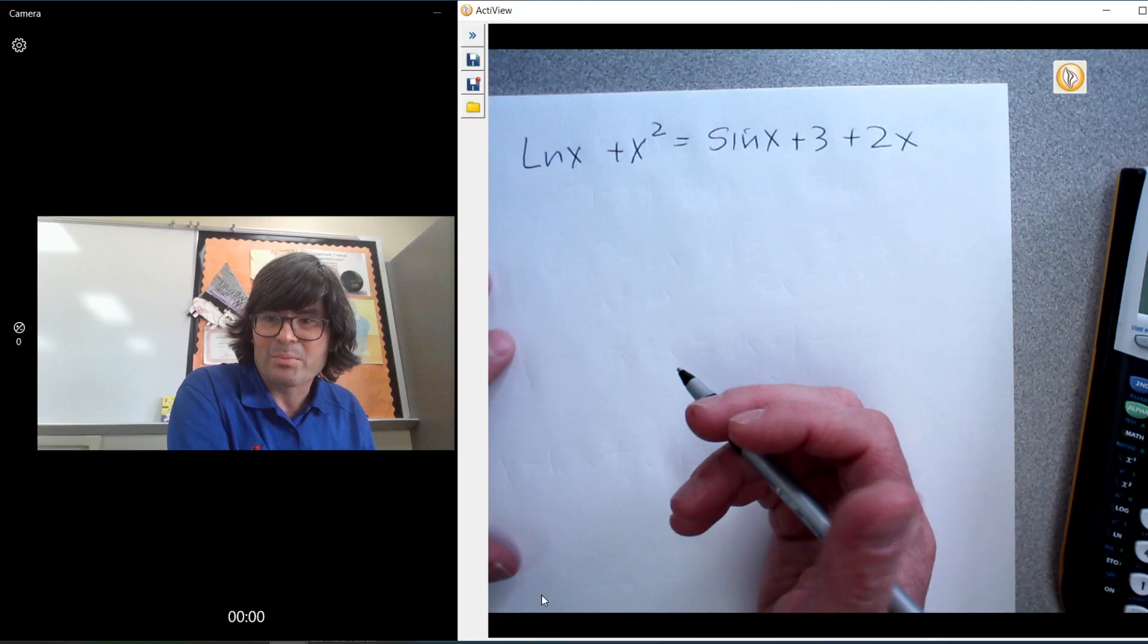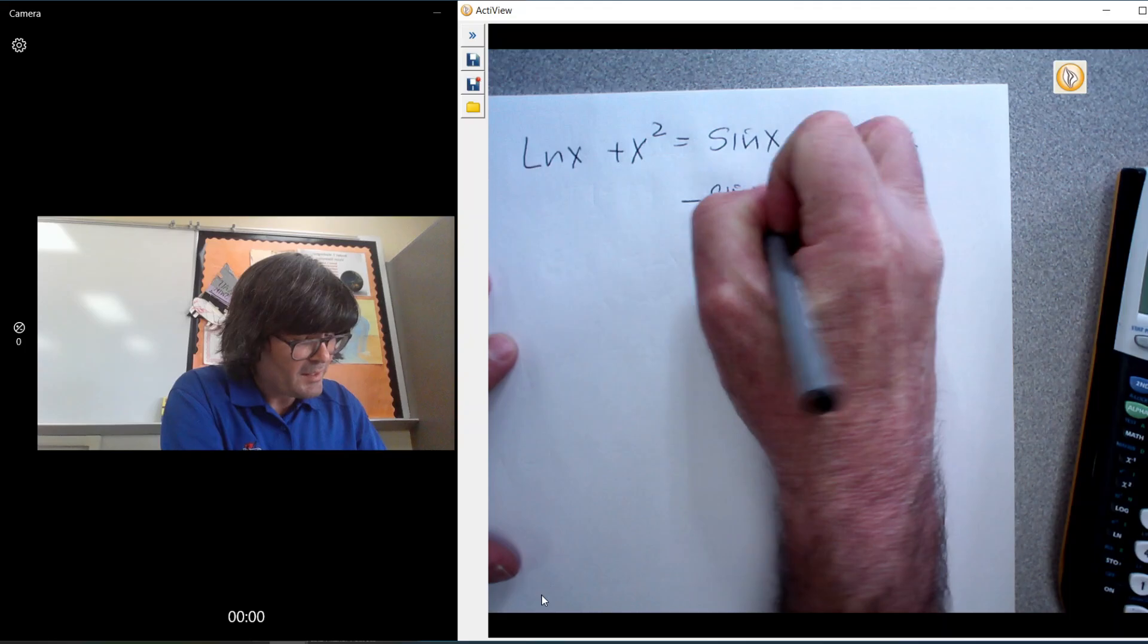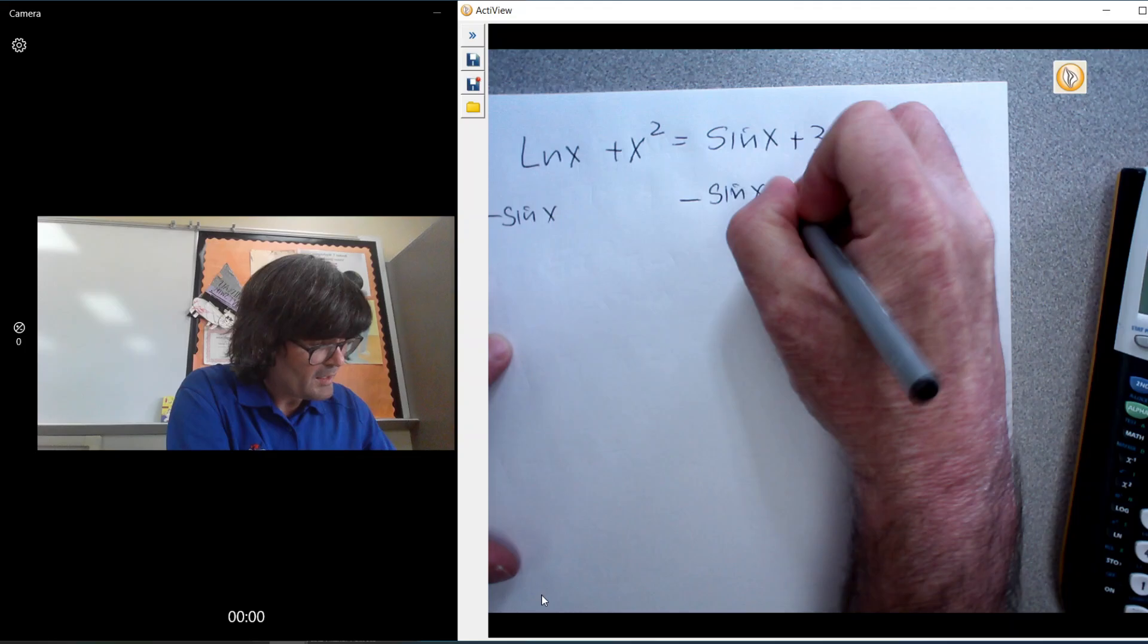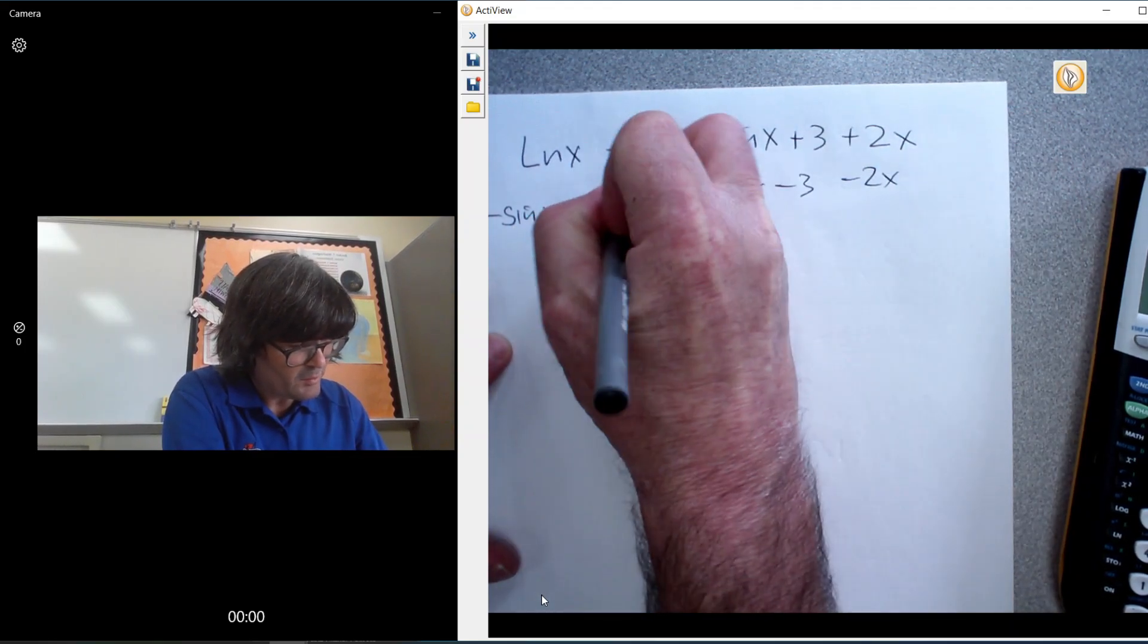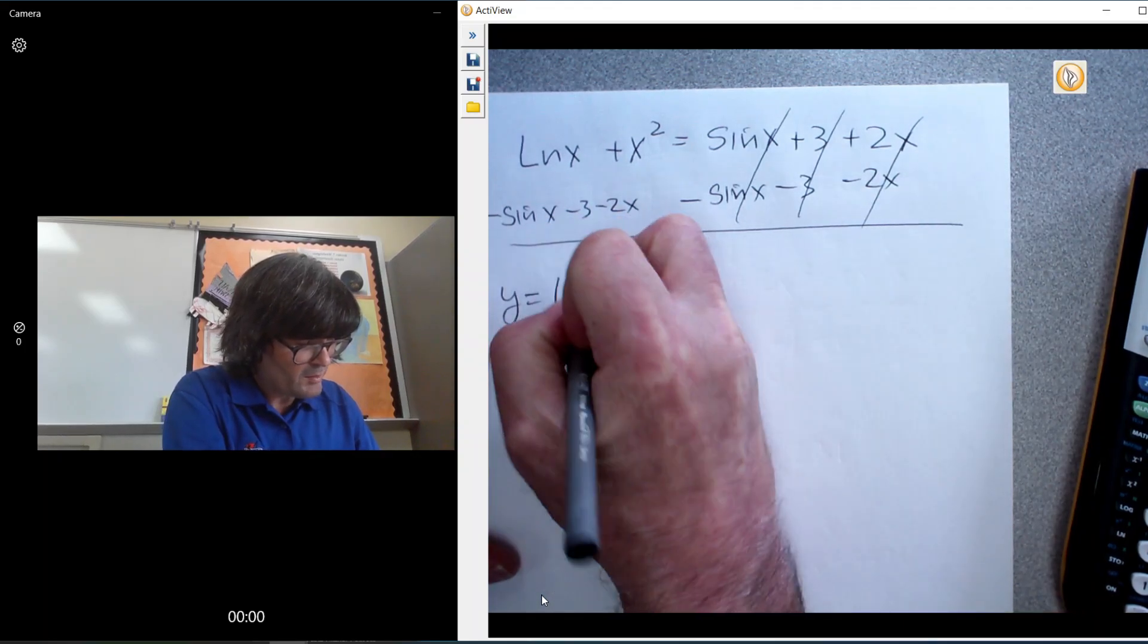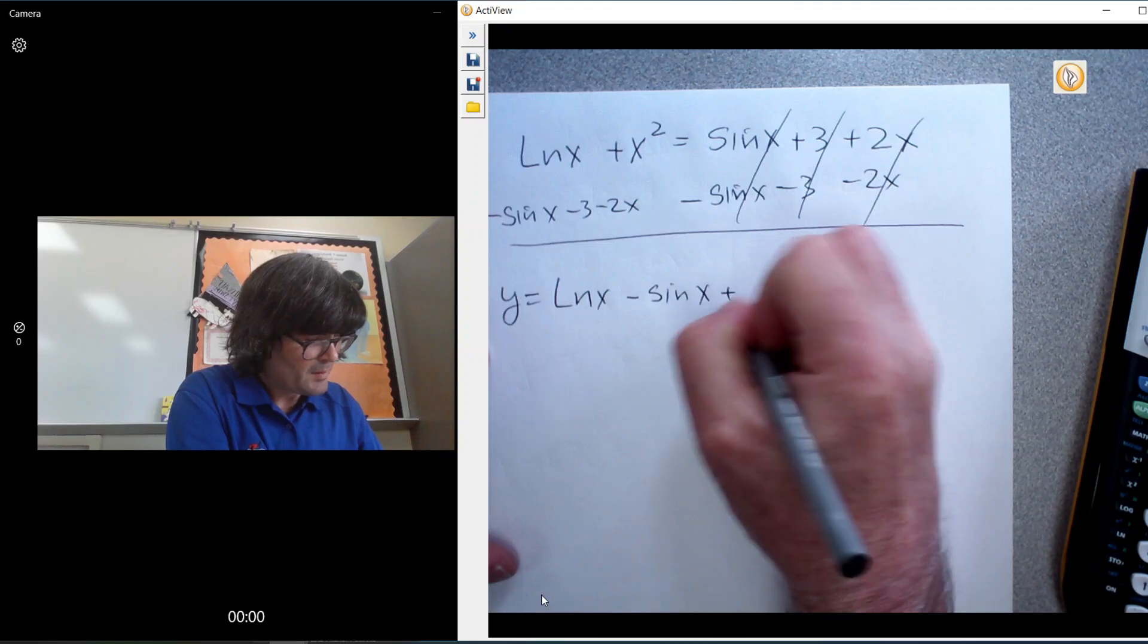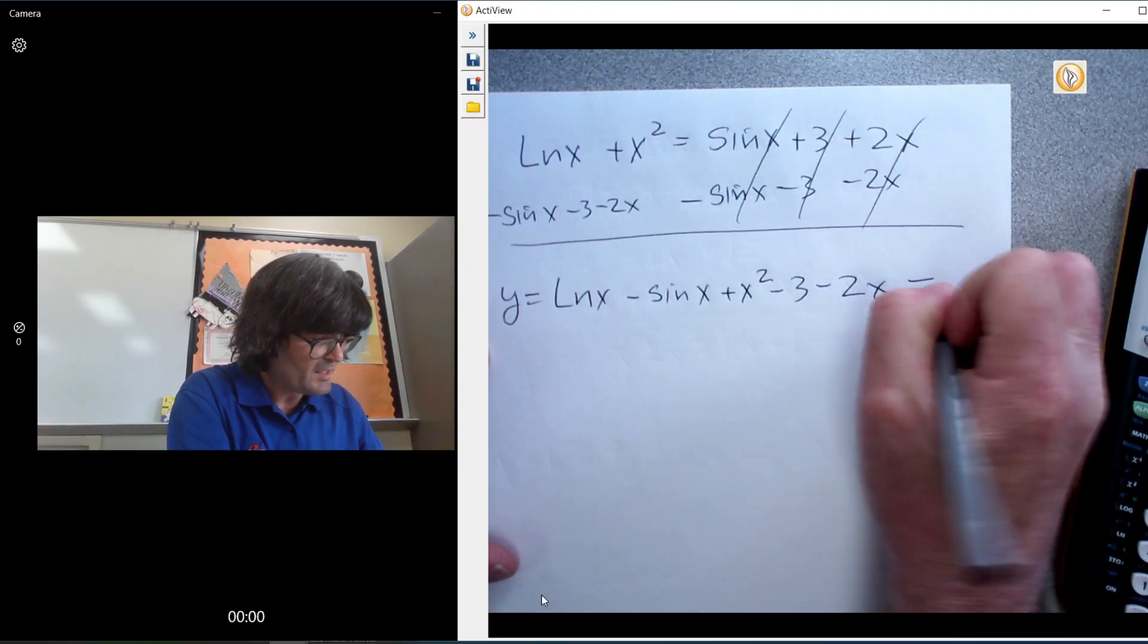There's no factoring. There's just no plan at all. So what I'm going to do is I'm going to move everything over to the left side, take away sine x, take away 3, take away 2x. And you get y equals natural log x minus sine x plus x² minus 3 minus 2x. And we want all that to equal zero.